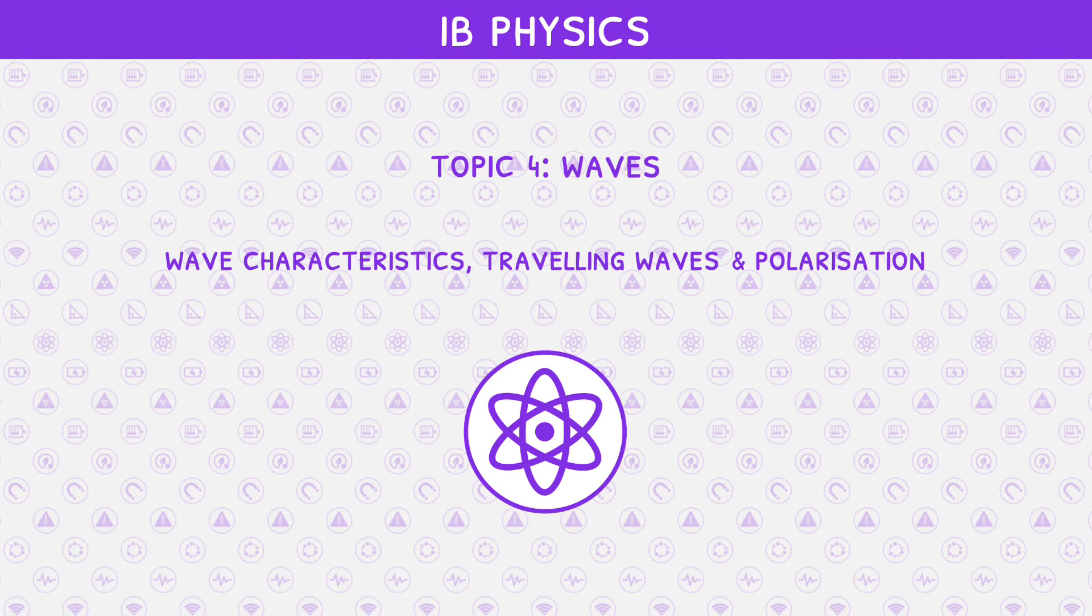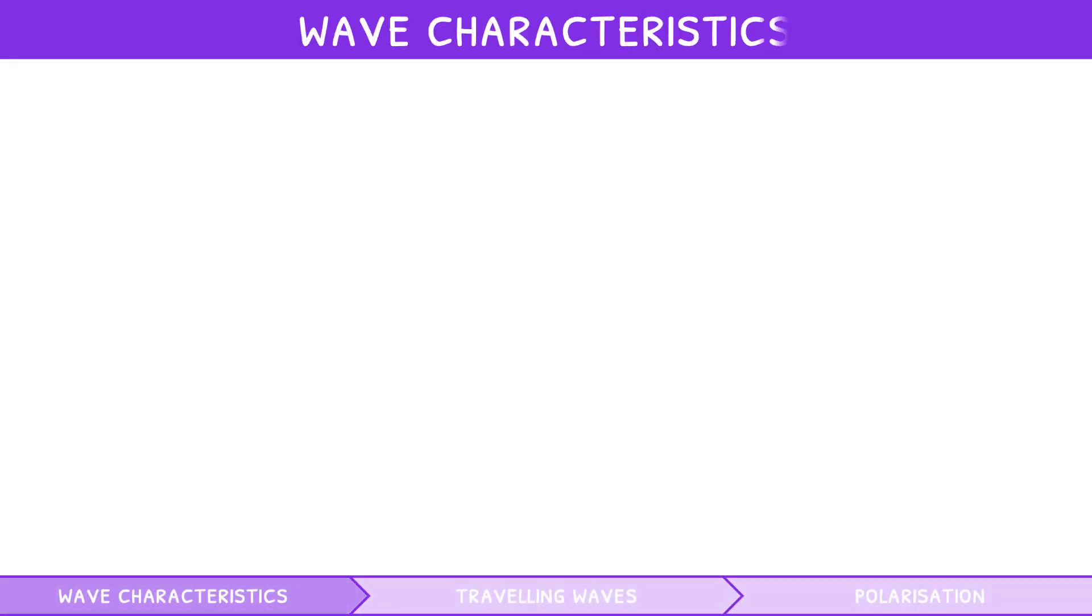Before watching this video, make sure you have covered our first IB Physics Topic 4 video, covering simple harmonic motion. But how does this match to the characteristics of waves? Well, a wave is just an oscillation that only transfers energy. So, basic wave characteristics are the same as those in oscillations.